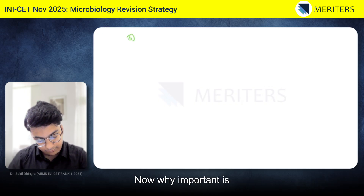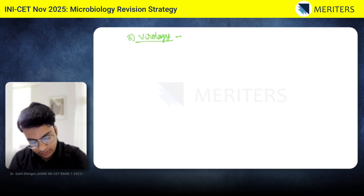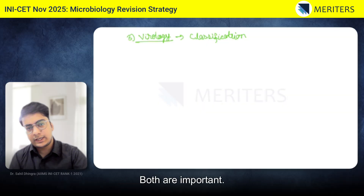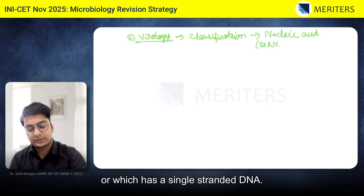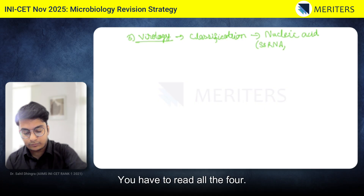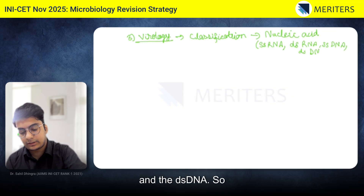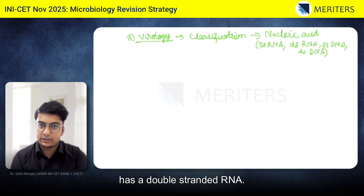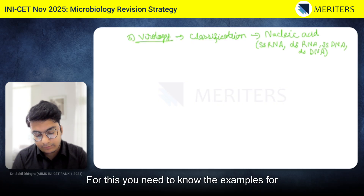Another very important topic is virology. The advantage in virology is you only have to study selected three to four viruses. The most important question type in AIIMS is the classification of viruses. There are two classifications — both are important. The most important is the nucleic acid classification: single-stranded RNA, double-stranded RNA, single-stranded DNA, and double-stranded DNA — four columns, and you need to know examples for all four varieties. They will mostly ask which of the following is the odd one out, giving you four options and asking which has double-stranded RNA.